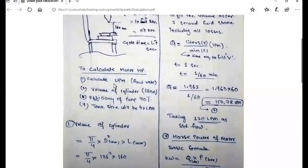First we need to calculate the LPM, liters per minute, how many liters per minute we have to input or the flow rate of the oil. Then volume of the cylinder, efficiency of the pump we take approximately 70%, and the tank size should be four times the LPM or liters per minute, that is the rule.